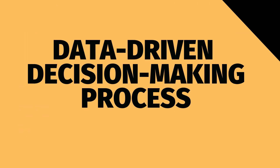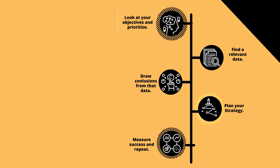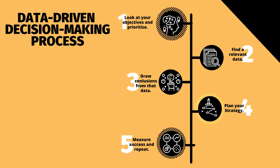Before you analyze your company's dashboard, it's best to start with a plan of action that details how you'll find the data you need and, more importantly, interpret the data to make the right decision. Here's a 5-step process you can use to get started with data-driven decisions: first, look at your objectives and prioritize; next, find relevant data; third, draw conclusions; fourth, plan your business strategy; and last, measure success and repeat.